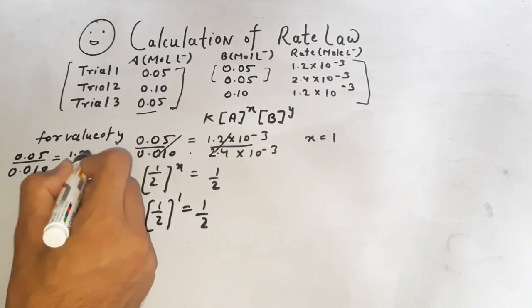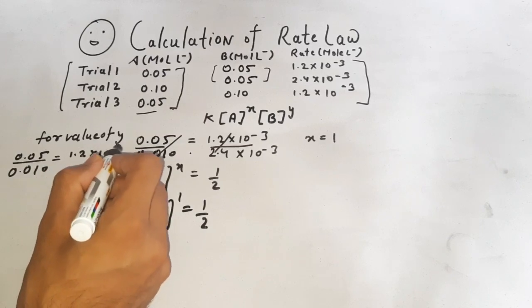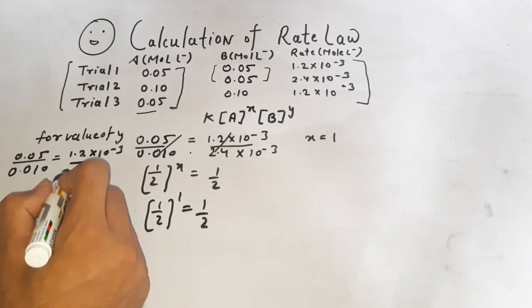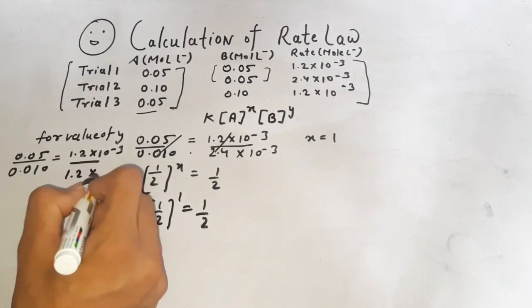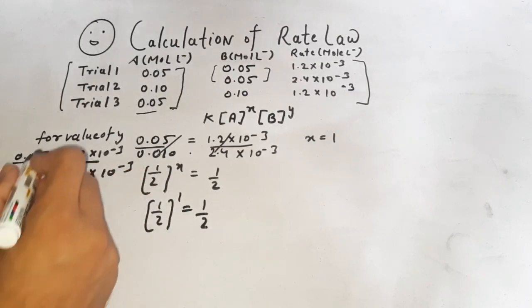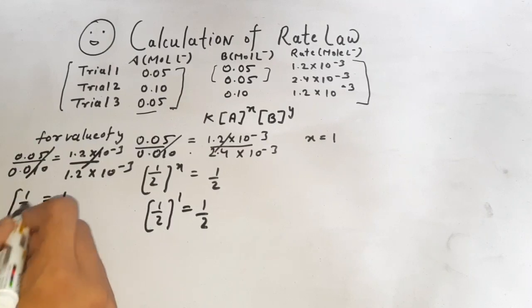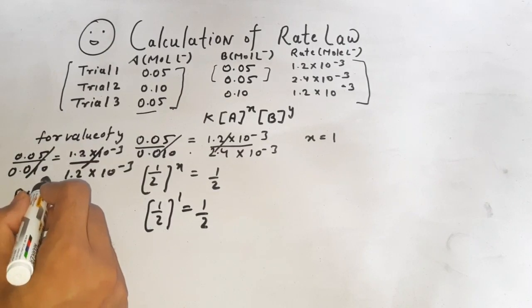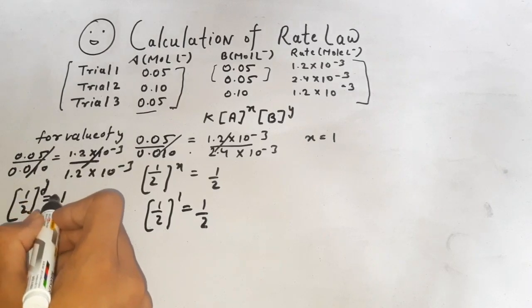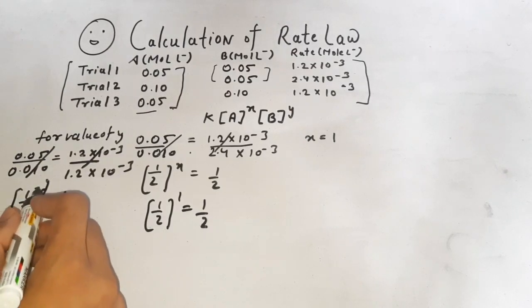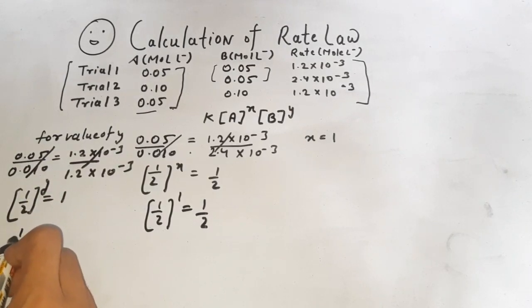1.2 into 10 minus 3 and 1.2 into 10 minus 3. Then by solving this, 1 by 2 equals to 1 equals to y. Then the value of y is 1, and when we put value of y equals 0, then 1 comes.